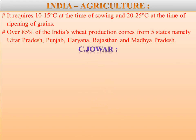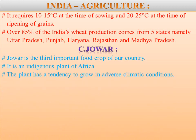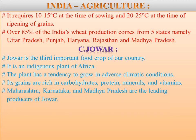Next we are going to learn about Jowar. Jowar is the third important food crop of our country. It is an indigenous plant of Africa. The plant has a tendency to grow in adverse climatic conditions. Its grains are rich in carbohydrates, protein, minerals, and vitamins, hence it provides cheap food to the lower section of the poor population. It is also used for fodder in many parts of the country. Jowar is essentially a crop of the peninsula of India. Maharashtra, Karnataka, and Madhya Pradesh are the leading producers of Jowar.